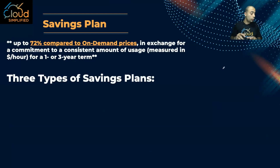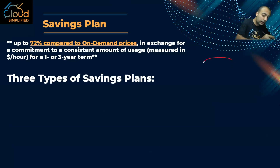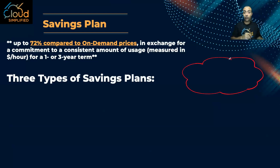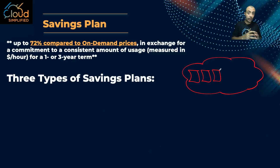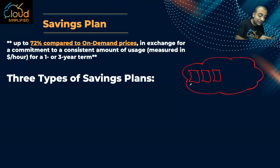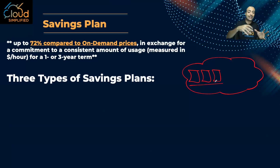The third option is called Savings Plans or Reserved Instances. To explain this, consider a scenario where I have my AWS cloud and I size according to the average rather than the peak, then scale out. If my application needs three virtual servers running 24/7 as the minimum to accommodate the average number of customers, those servers will always be on.